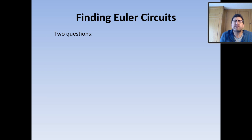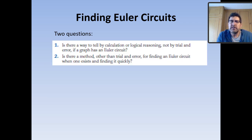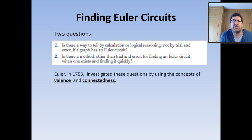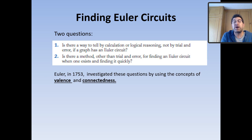To find an Euler circuit, we ask ourselves two questions. First: is there a way to tell by calculation or logical reasoning — not by trial and error — if a graph will have an Euler circuit? Second: is there a method, other than trial and error, for finding such an Euler circuit where one exists? In 1753, Leonard Euler investigated these questions using the concept of valence and connectedness.